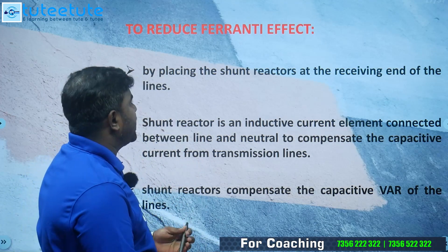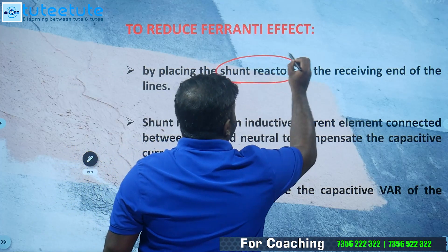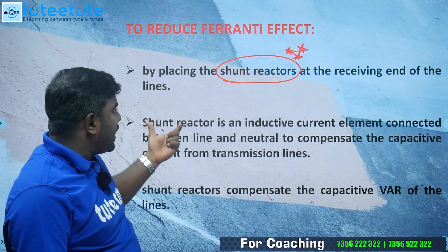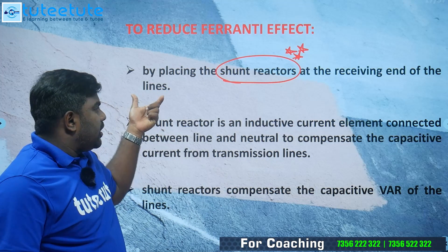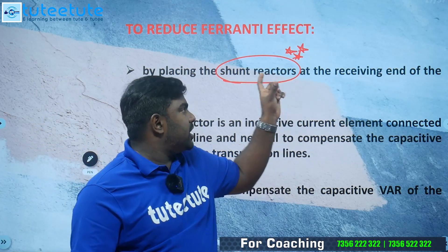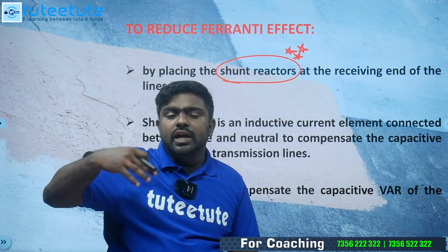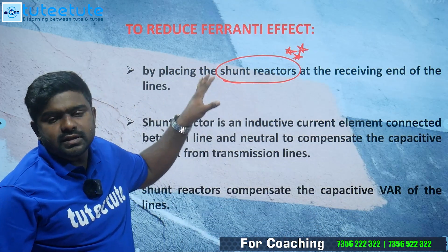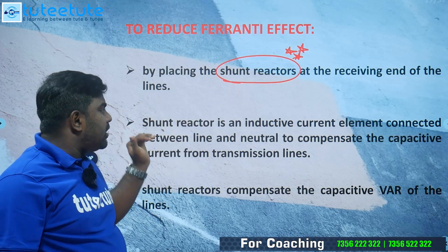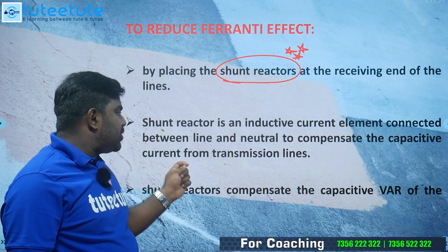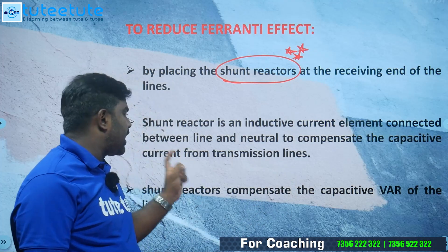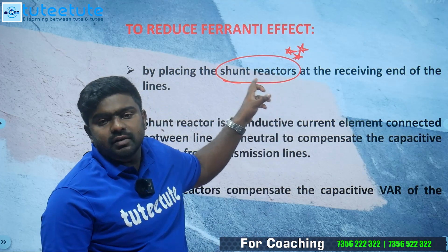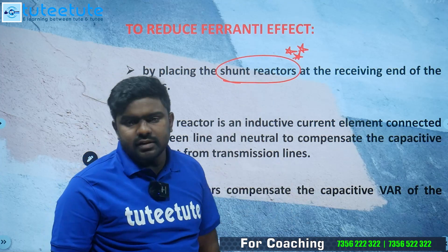By placing a shunt reactor at the receiving end of the line — we call it shunt compensation, shunt reactor — that is a reactive element connected shunt to reduce the receiving end voltage. The shunt reactor is an inductive current element connected between line and neutral to compensate the capacitive current from the transmission line. The extra capacitive current drawn by the line will be compensated by this reactive device, which is the shunt reactor.